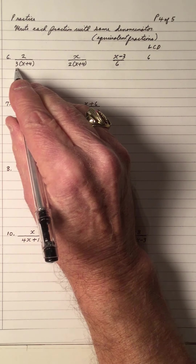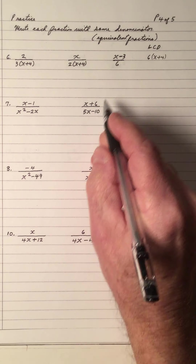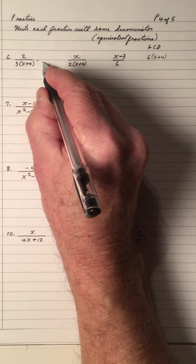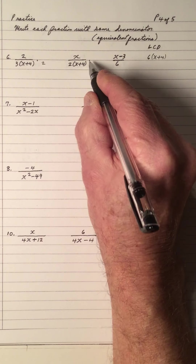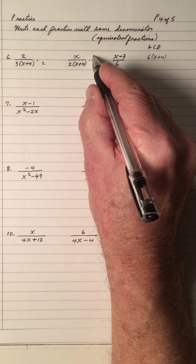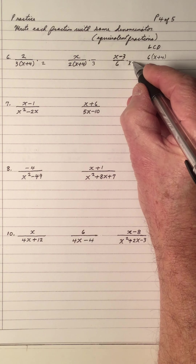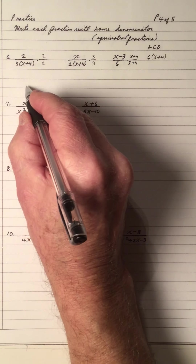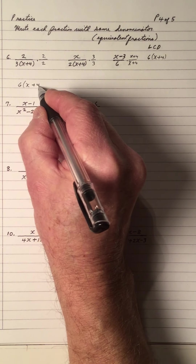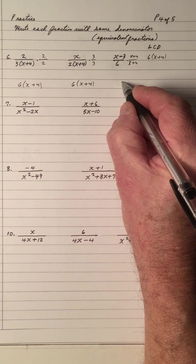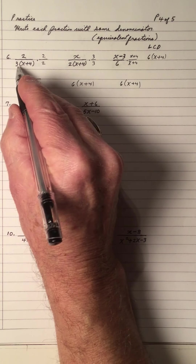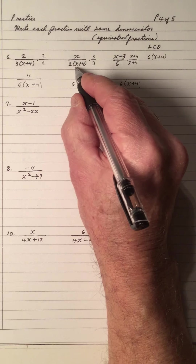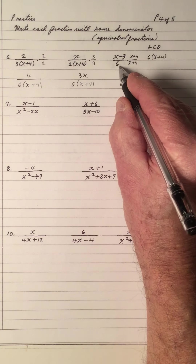I see that 6 is the LCD for 3 and 2, and I need an x plus 4. So 6 is the LCD for 3 and 2 — I need to multiply 3 times 2 to give me 6, and I don't need an x plus 4 here. Right here I need a 3, and right here I need an x plus 4. But we have to go 2 over 2, 3 over 3, and x plus 4 over x plus 4. Your denominator is 6 times x plus 4 for all three.